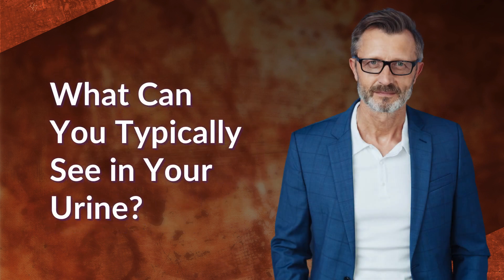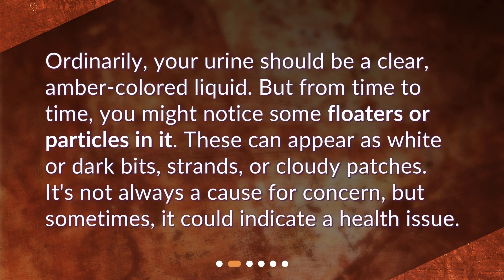What can you typically see in your urine? Ordinarily, your urine should be a clear, amber-colored liquid. But from time to time, you might notice some floaters or particles in it. These can appear as white or dark bits, strands, or cloudy patches. It's not always a cause for concern, but sometimes it could indicate a health issue.